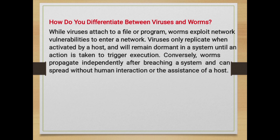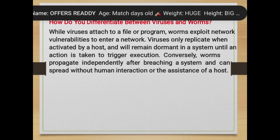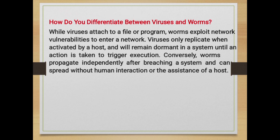How do you differentiate between viruses and worms? While viruses attach to a file or program, worms exploit network vulnerabilities to enter a network. Viruses only replicate when activated by a host and will remain dormant in a system until an action is taken to trigger execution. Conversely, worms propagate independently after breaching a system and can spread without human interaction or the assistance of a host.